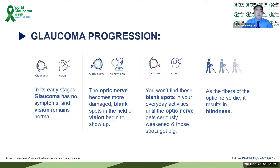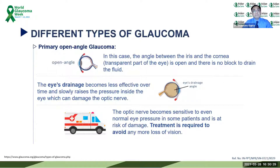Glaucoma normally will not have any symptoms, so by the time significant glaucomatous damage is present, a significant and irreversible loss has already occurred — that is where early detection and early diagnosis come in. There are different types of glaucoma. In primary open angle glaucoma, the angle between the iris and cornea is open with no block to drain the fluid, but over time the drainage becomes less effective, pressure builds up, and even a normal optic nerve can become sensitive to normal eye pressure, risking damage.